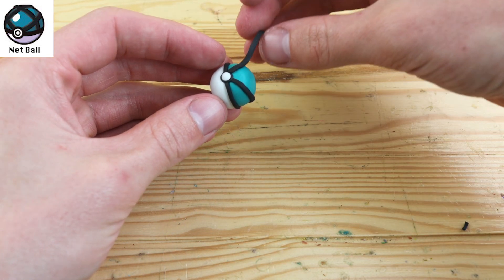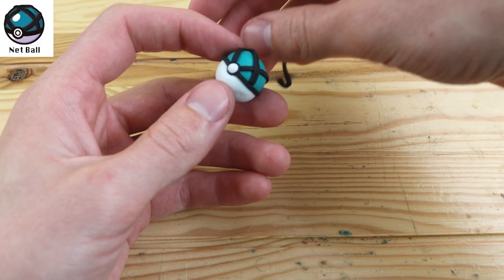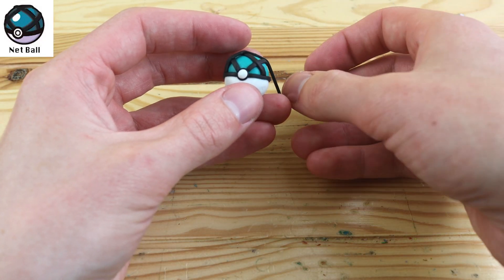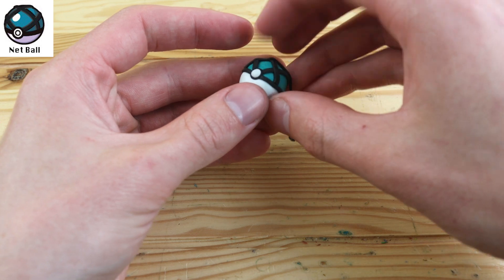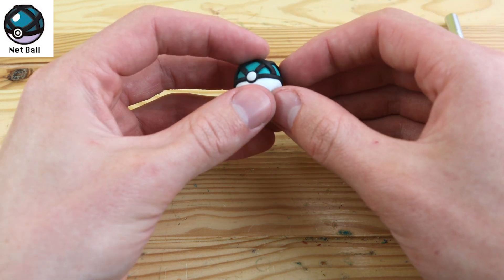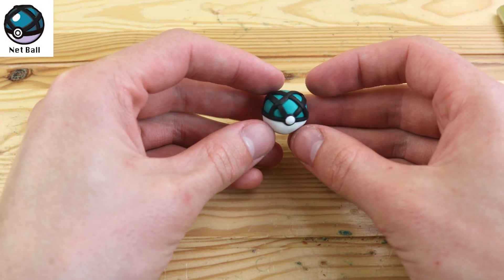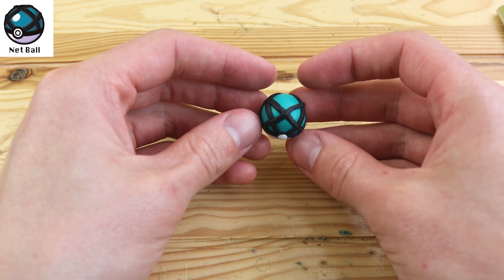Now we have another one of my favorites in design. This is the Net Ball. This is more likely to succeed against a Water and Bug type Pokémon. I really love this net pattern on the top of the ball. And I think it makes it look much more unique than a lot of the other Pokéballs.